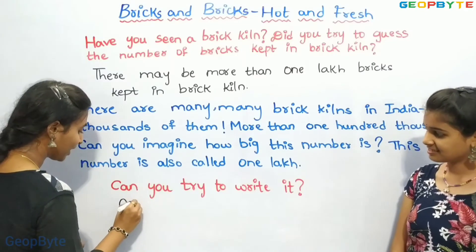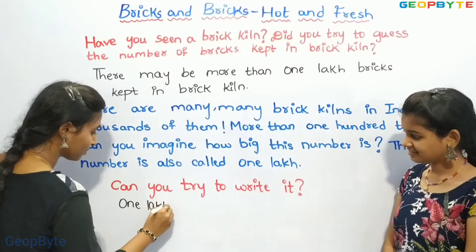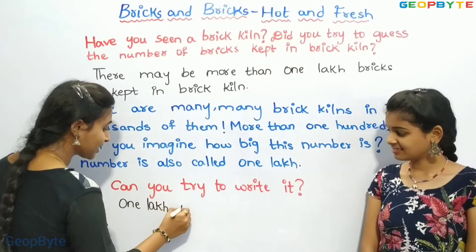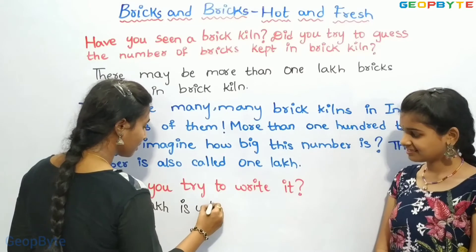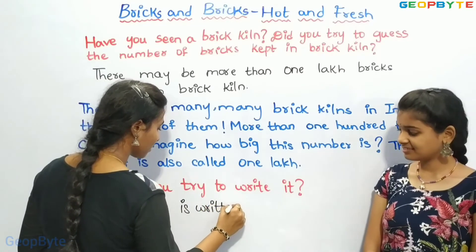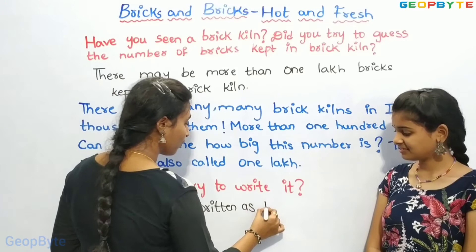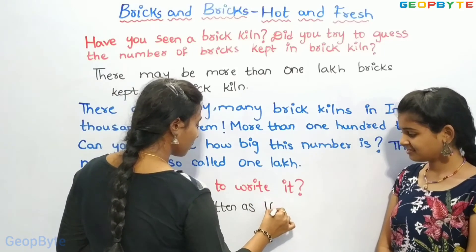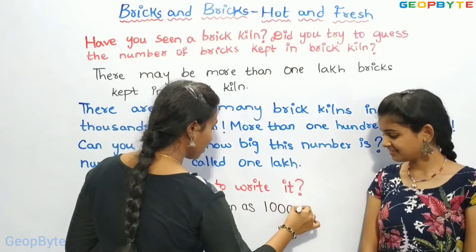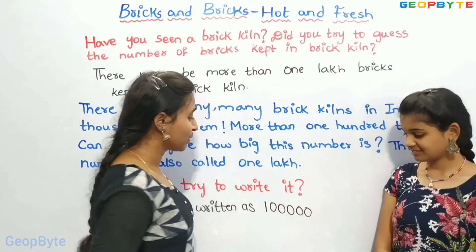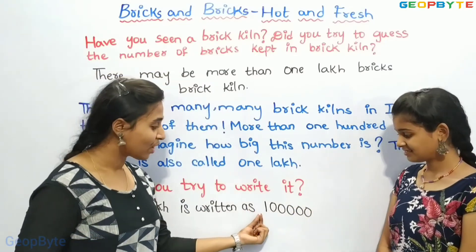1 lakh is written as 1 followed by 5 zeros: 1,00,000.